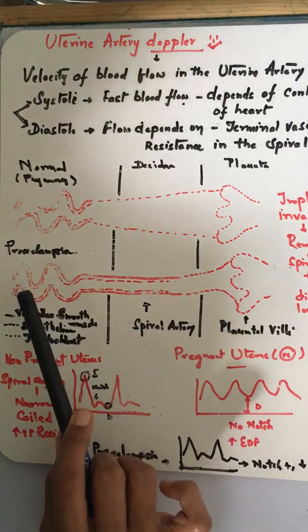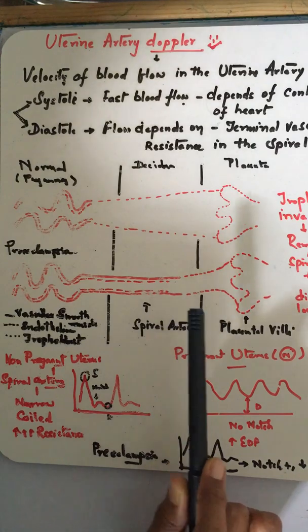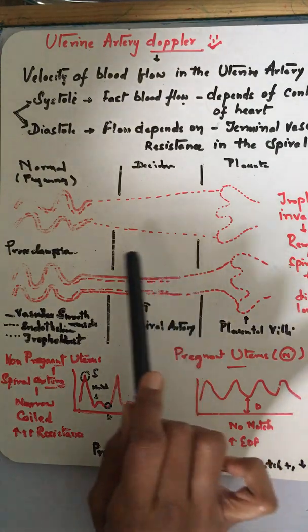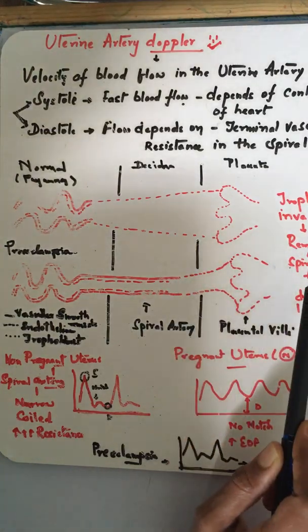What happens in preeclampsia? In preeclampsia, this trophoblastic invasion and remodeling is incomplete. Due to incomplete remodeling, these vessels are still narrow and not dilated, so blood flow will be less and nutrients to the baby are also less.